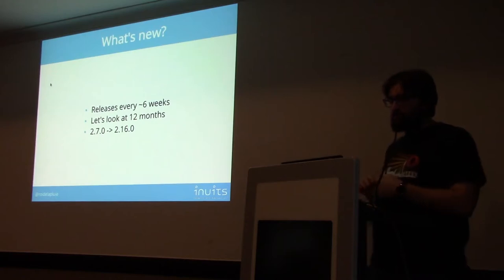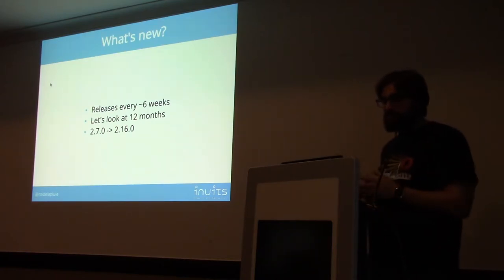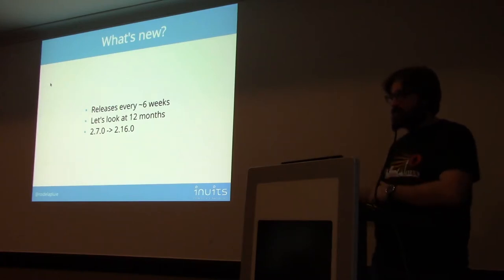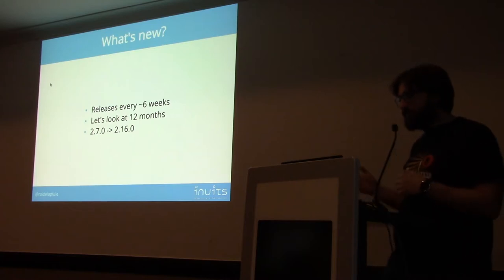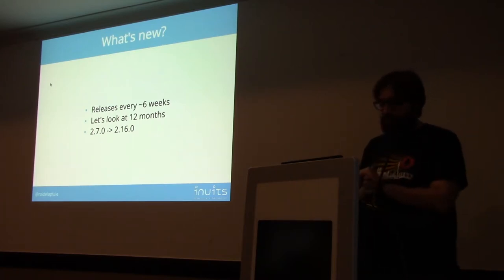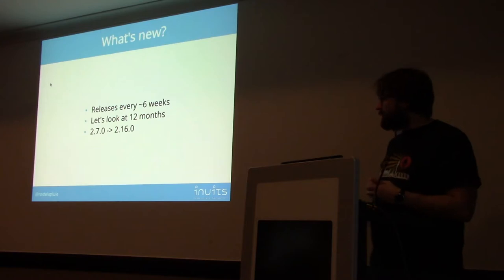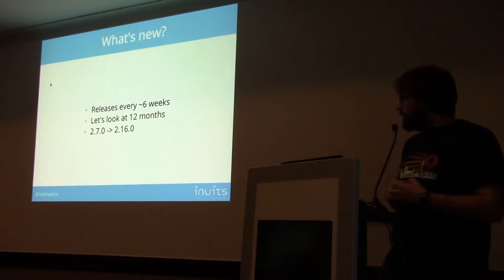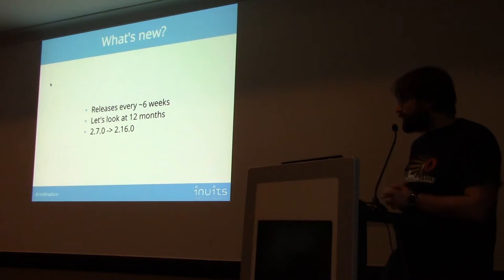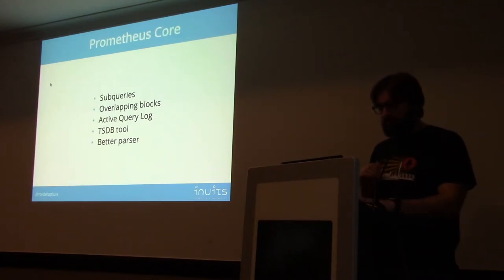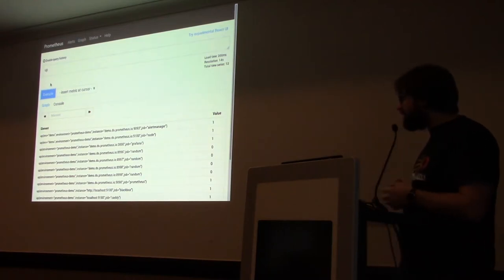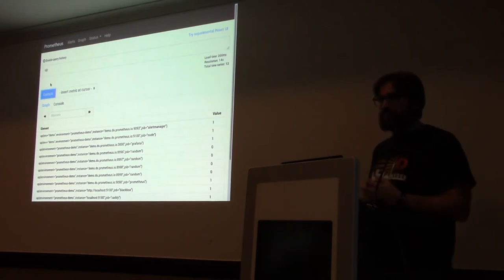For the last one year and a half, Prometheus is releasing new versions every six weeks, depending on if there are big things in the works or not. So every six weeks we roll out a new release candidate. We will look at the last one year, from version 2.7 to version 2.16. Version 2.16 will probably go out next week — we are working on the release candidate now. The Prometheus code doesn't change much in the sense that if you used it one year ago, now you won't notice a lot of differences.